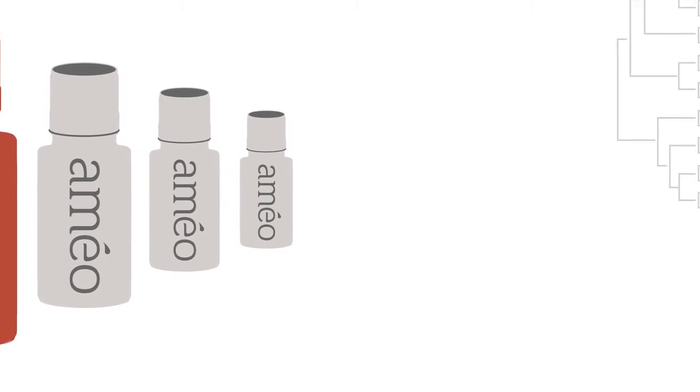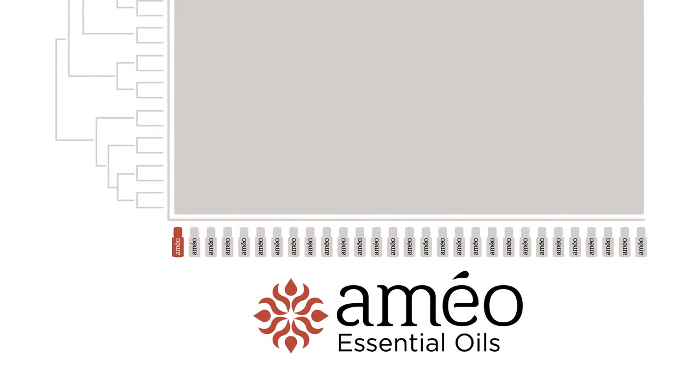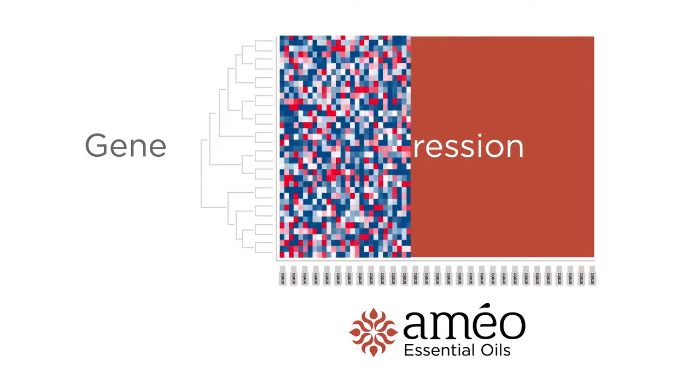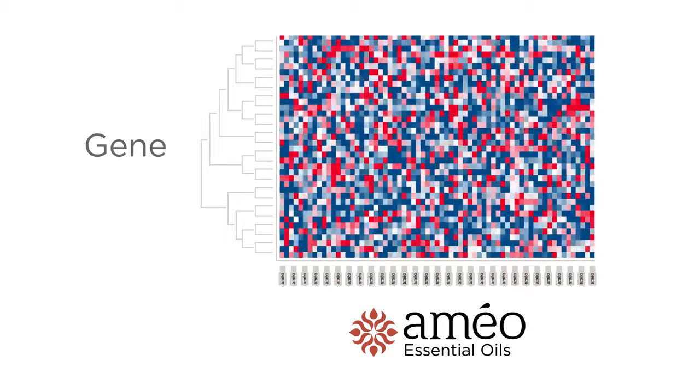AMEO Gene Expression uses heat mapping to analyze how each gene responds to AMEO essential oils. The red color shown represents an increase in gene activity, while the blue shows a decrease.